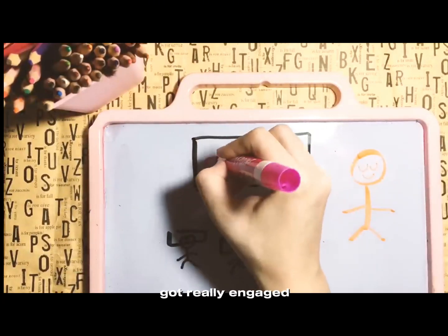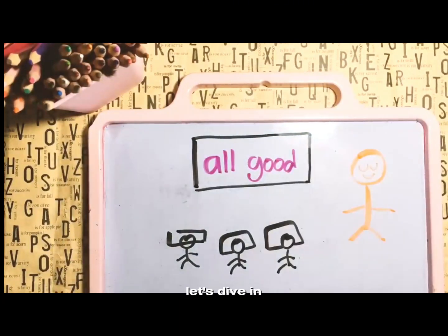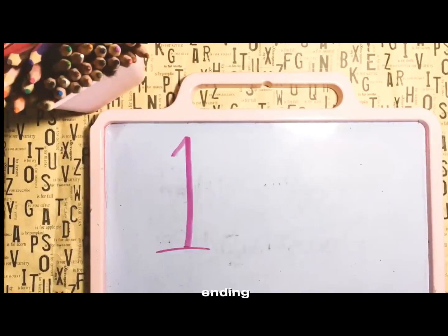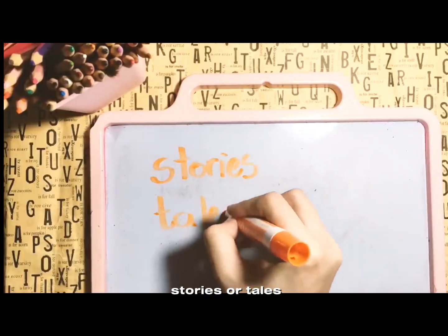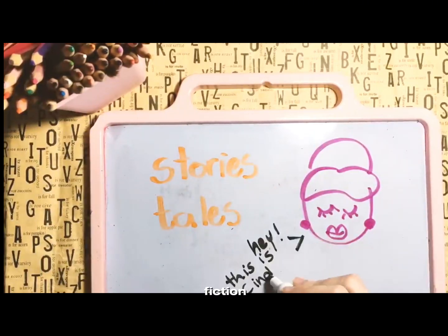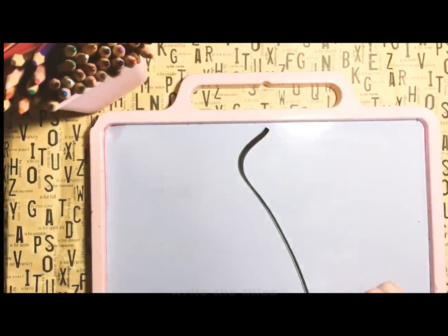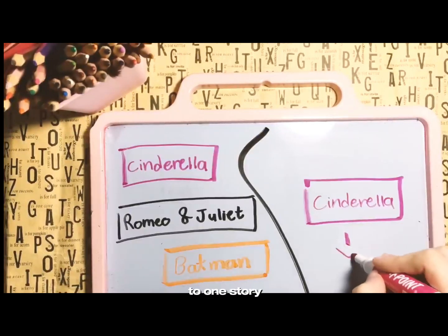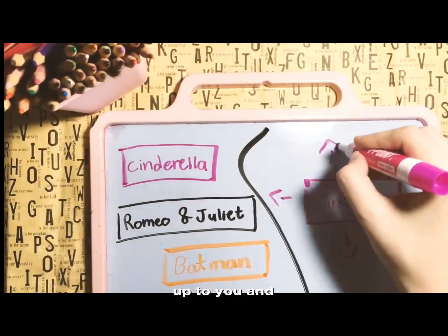The first activity is 'Alternate Ending.' Pick some famous stories or tales like the story of Cinderella, Snow White, or any popular fiction. Write the titles on cards, or you can stick to one story for all — it's up to you.